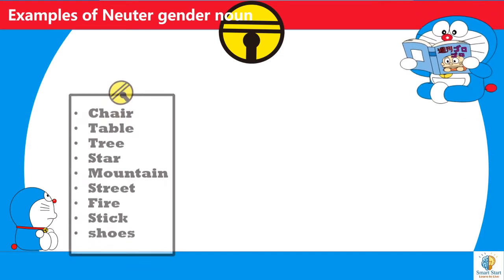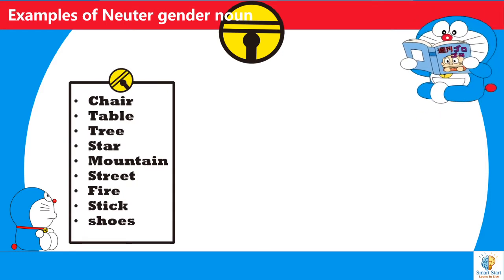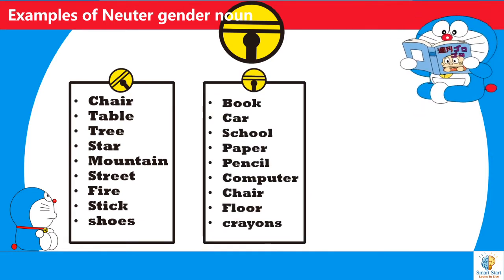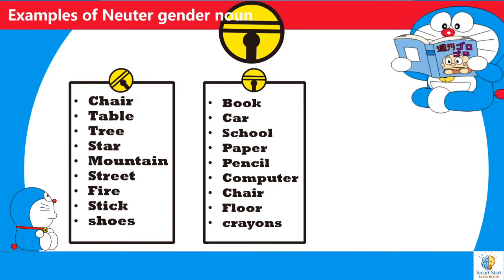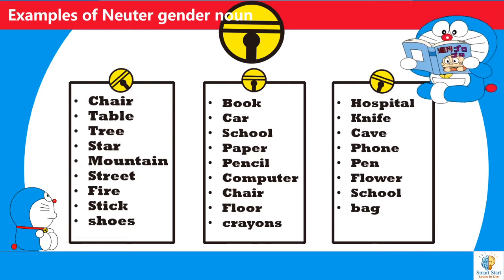Examples of neuter gender are chair, table, tree, star, mountain, street, fire, stick, shoes, book, car, school, paper, pencil, computer, chair, floor, crayon, hospital, knife, cave, phone, pen, flower, school, and bag.